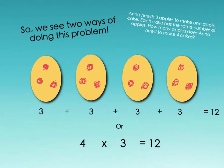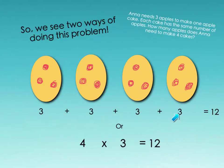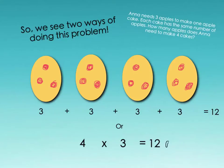Looking at this same problem about Anna and her cakes, we've seen two different ways of finding the answer. We used repeated addition — three plus three plus three plus three gave us 12 apples — or we used multiplication, four groups of three, to find our product of 12. Now guys, what is my answer missing? It's missing the label. We cannot have naked numbers — 12 apples.